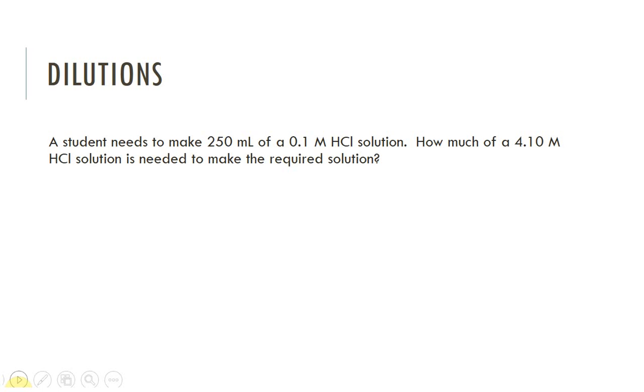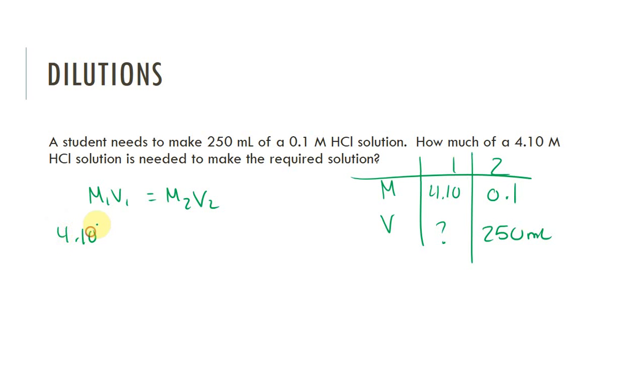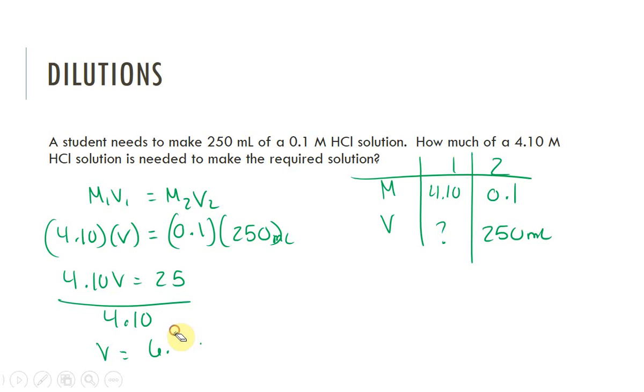A student needs to make 250 milliliters of a 0.1 molar hydrochloric acid solution. How much of a 4.1 molar hydrochloric acid solution would they need? MV, 1 and 2. Add 4.1 molar. Don't know that. 250 milliliters of 0.1. So, M1V1 is equal to M2V2. 4.10 times V is equal to 0.1 times 250. 4.10V is equal to 25. The molarities are going to cancel. We're going to divide both sides by 4.10. And you end up getting volume is equal to 6.09. I'll say 6.1 milliliters.